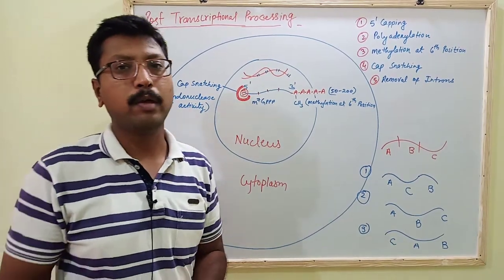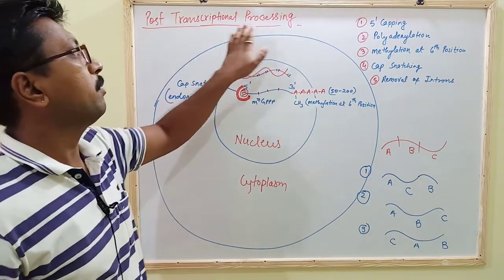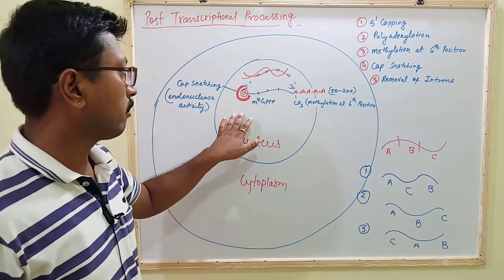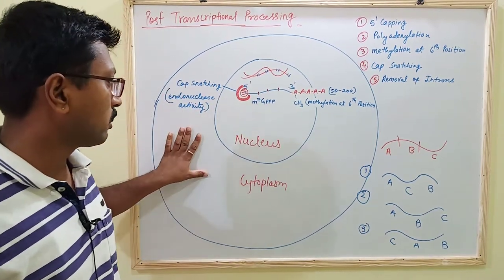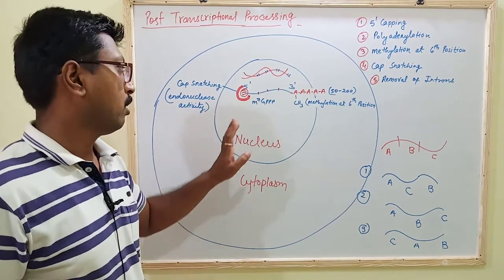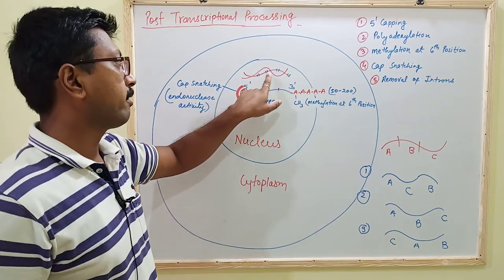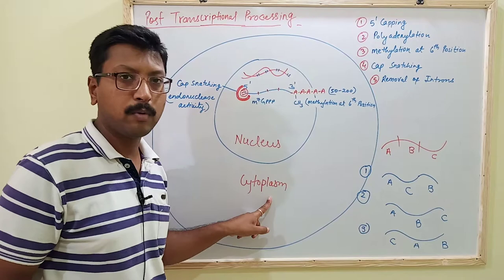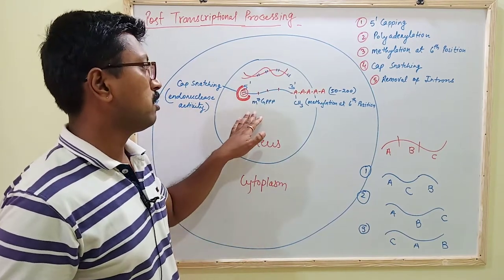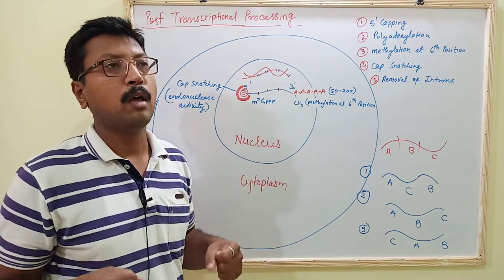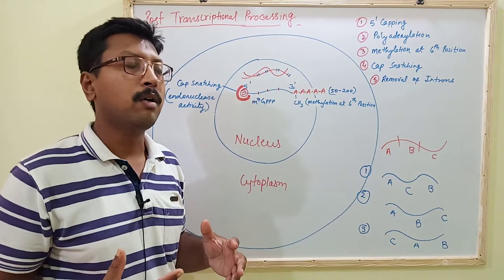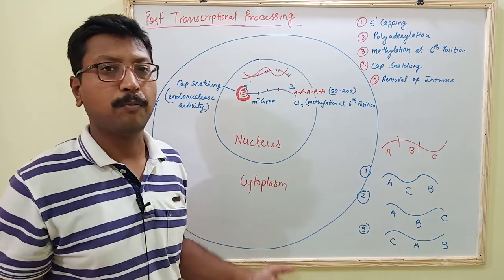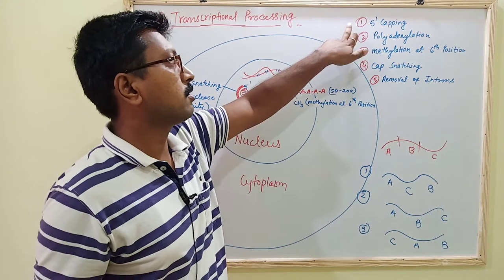Hello, today I am covering the topic of post-transcriptional processing. As we know, the viral genome gets transcribed in the nucleus, especially in the case of DNA viruses. The host cell has a nucleus and cytoplasm. In the nucleus, viral DNA is transcribed into mRNA, and this mRNA undergoes modificational changes before going out from the nucleus to the cytoplasm. These changes are required for the establishment of mRNA, attachment of the 40S ribosome, triggering of translation, and preparation of protein. The modifications are: first, 5' capping;